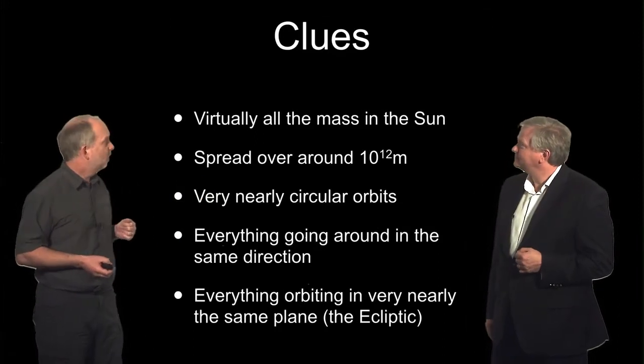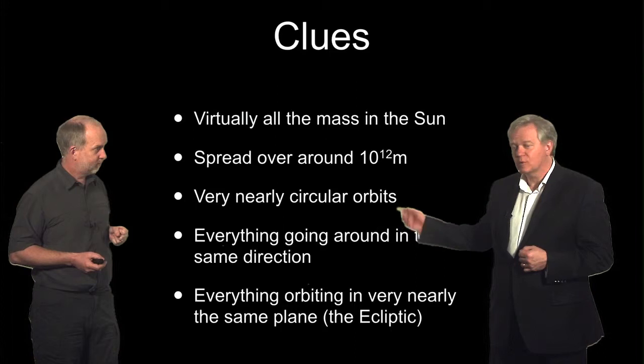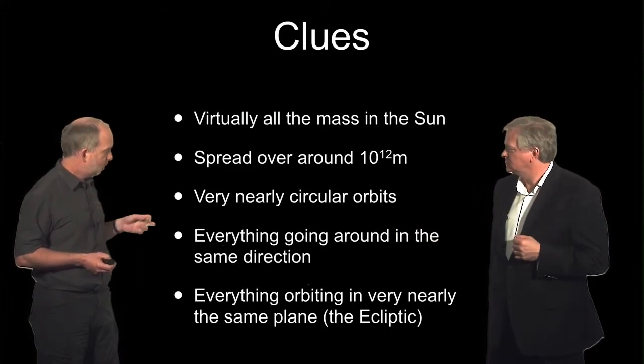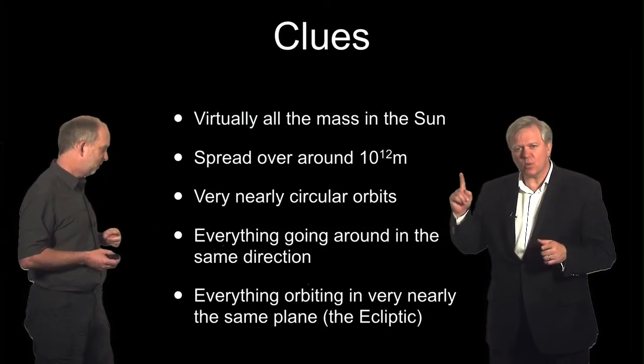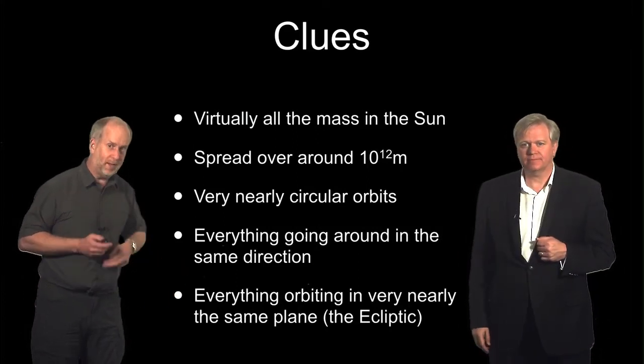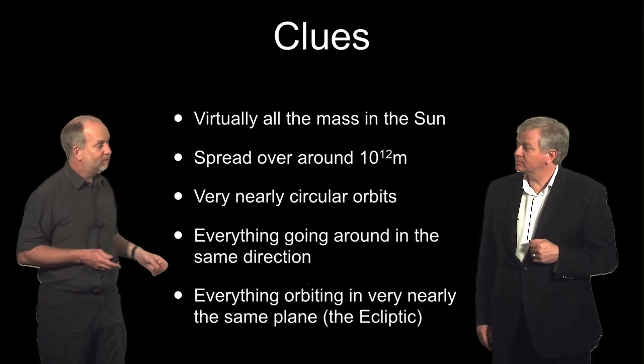So here are our clues. Virtually all the mass is in the sun. And it's spread out over 10 to the 12 meters, so it has a certain scale. Orbits are pretty damn near circular. And everything's going around in the same direction. And in the same plane, the ecliptic plane. So any theory of solar system formation has to explain these facts.